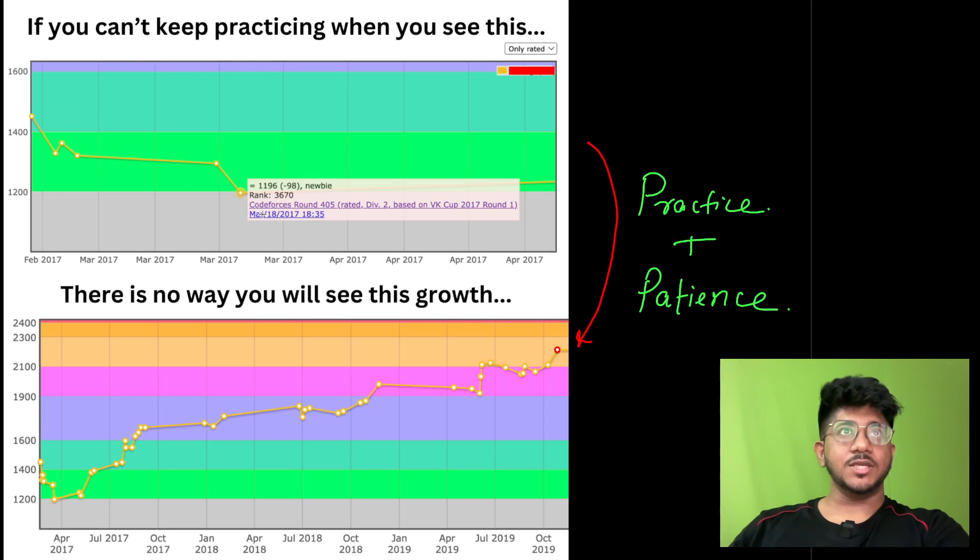If you can't keep practicing when you see dips like this, when you are becoming newbie, this is actually my own rating graph. This is my oldest graph when I started in 2017. In my first year, I kind of started giving contests, but it dipped very fast and I went to newbie. Back then, becoming newbie was bad because you used to start at 1500. But if you can't keep practicing when you are over here and you are still seeing rating drop, you will never see this particular growth. Even for you, it might be just that you are right now somewhere over here, and if you just stop over here, you will never see this particular part of the graph.